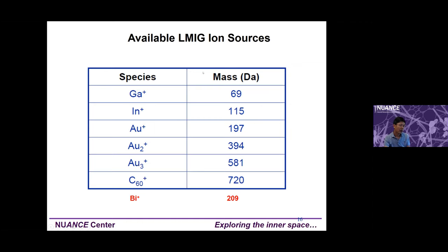The primary ion source often used in our ToF-SIMS is gallium-69. Some instruments use gold, indium, or C60. Newer instruments mostly use bismuth clusters. Gallium-69 is smaller compared to other primary ions, which is an advantage — it is easier to focus and gives much better spatial resolution for mapping. However, because it is small and high energy, it causes more damage, making it harder to get higher mass fragments. With our gallium source we mostly get fragments up to about 200–300 mass units. With bismuth you can get up to 500–600, so most new instruments now use bismuth.